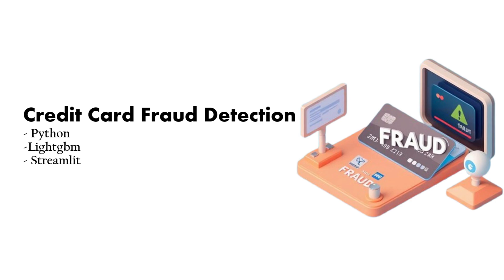Welcome back to Tensor Titans! Today we are diving into an exciting and crucial project: credit card fraud detection using machine learning. Fraudulent transactions cost businesses billions of dollars each year, and AI can help us fight back. We will build a powerful fraud detection model and a Streamlit app to make predictions in real time — so make sure to watch till the end. Before we see the workflow, let me introduce you to LightGBM.